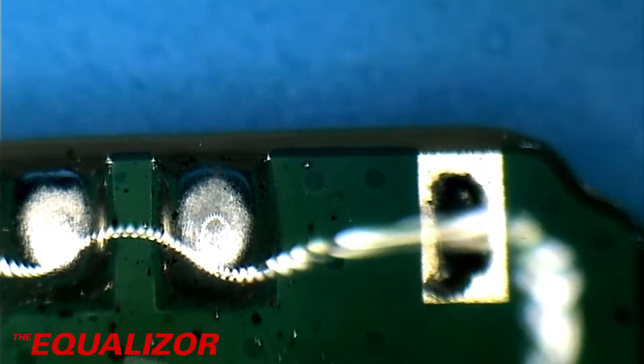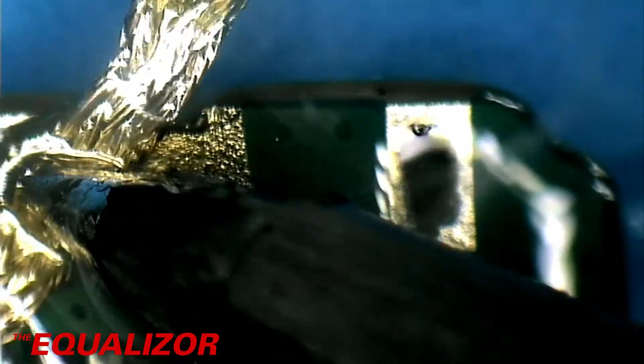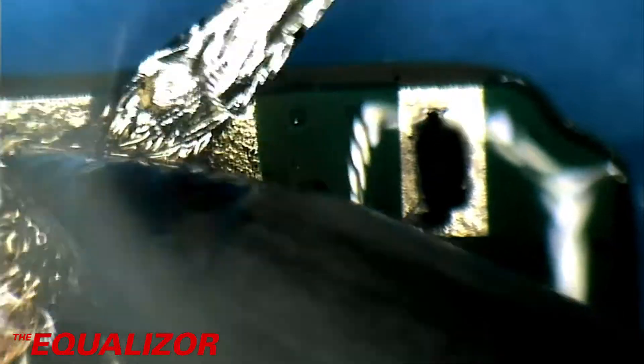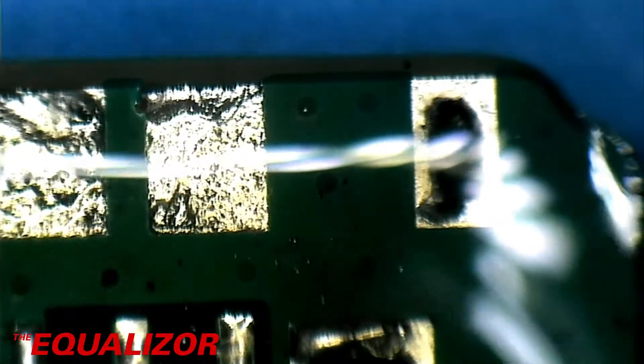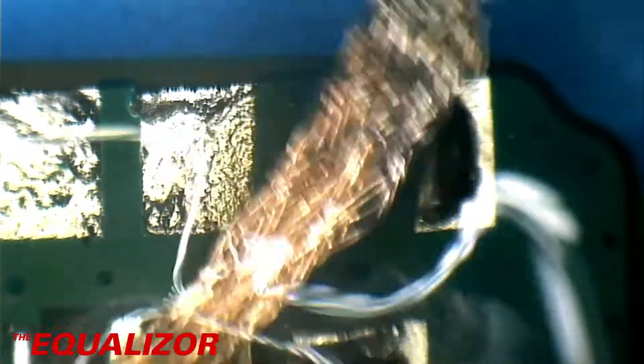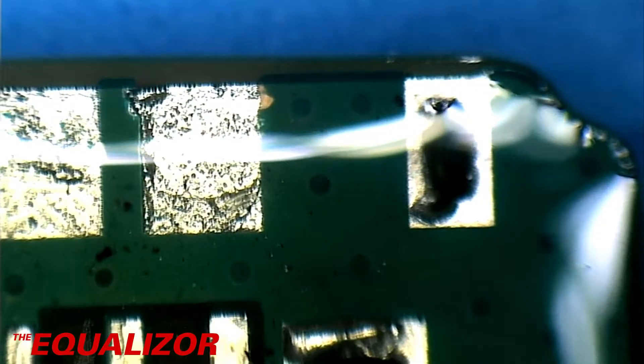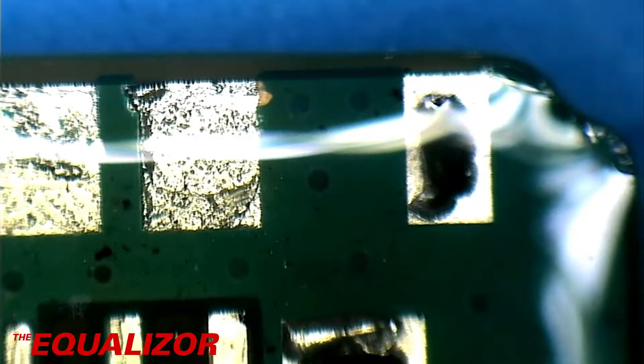We need to now take off the solder with some braid, otherwise the new socket won't go on flat. That wouldn't be good. Try not to damage these other pins as well. Okay, that looks pretty good, I'll just take a little bit more off there. Perfect! That looks nice and flat to me.